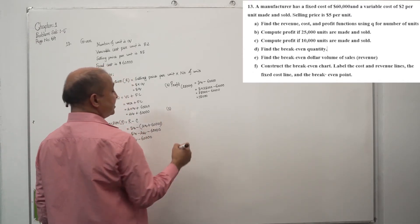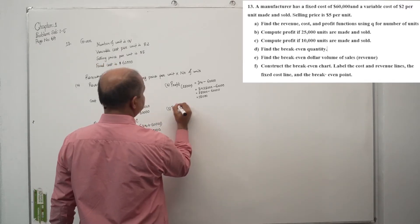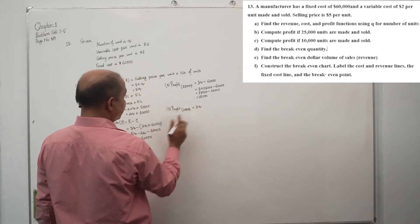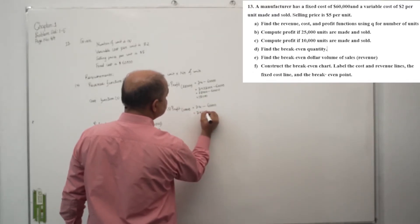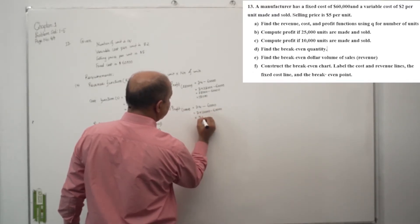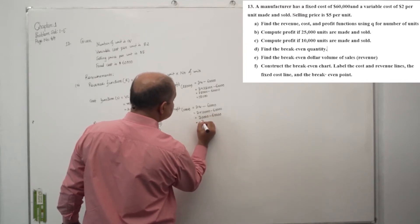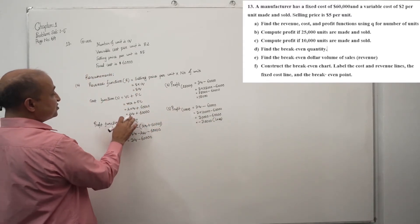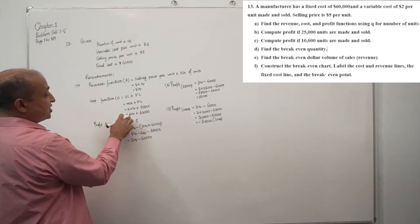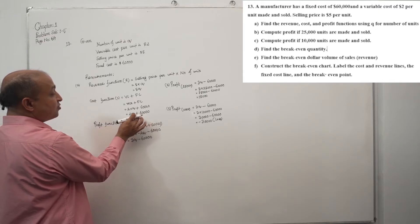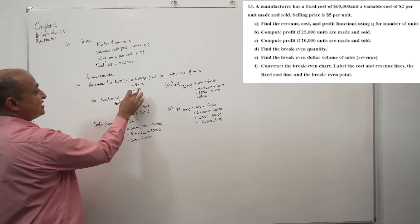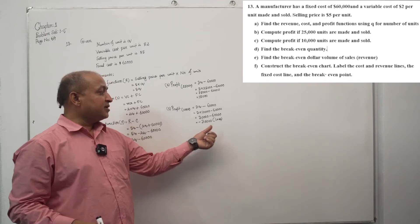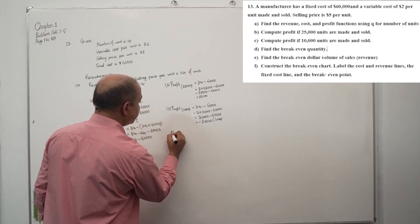Requirement C: compute profit if 10,000 units are made and sold. Profit at 10,000 units: 3 × 10,000 minus 60,000 equals 30,000 minus 60,000, which equals minus $30,000. This is a loss of $30,000.